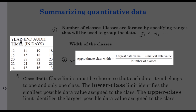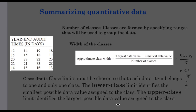Let's calculate the approximate class width. Looking at this data, the smallest value is 12 and the largest is 33. So: largest value 33 minus smallest value 12 divided by 5 classes. 33 minus 12 is 21. 21 divided by 5 is approximately 4. So the approximate class width is 4. We have 5 classes with width 4. Class limits must be chosen so that each data item belongs to one and only one class. The lower class limit identifies the smallest possible value assigned to that class, and the upper class limit identifies the largest value assigned to that class.